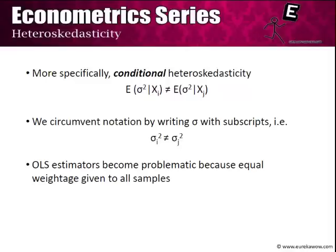More specifically, what we are really talking about is conditional heteroscedasticity—that is, the expectation of sigma squared given xi is not always equal for all values of i. There is also something called unconditional heteroscedasticity, but that does not concern us further. We circumvent this notation by writing sigma with a subscript: sigma i squared is not equal to sigma j squared, simply to avoid writing the conditional expectation notation every time.